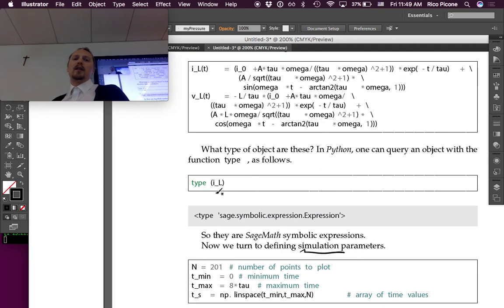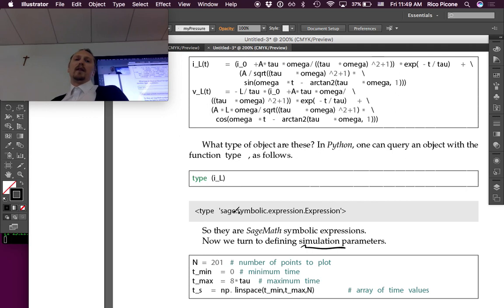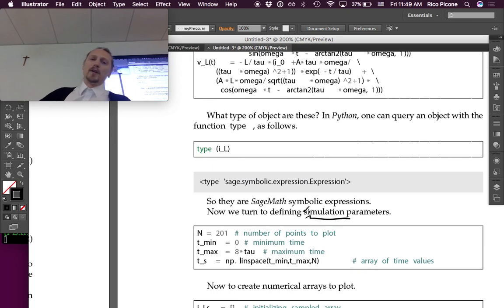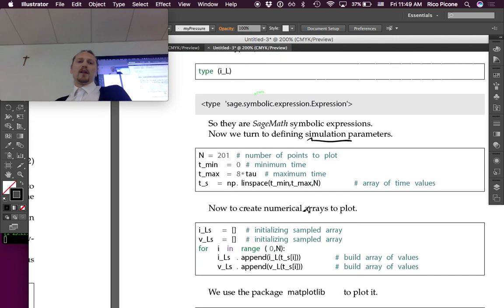In Python, one can query an object with the function type as follows: type of IL gives, it returns this object. It says, oh, it's a symbolic expression. That's the type of thing that's useful when you're programming - you're like, okay, I got this object, what is it? It's a symbolic expression. You can do certain things with symbolic expressions that you can't do with other things, and you can do other things with other types of objects.